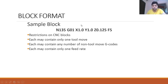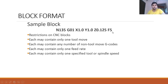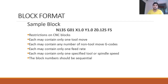Each block may contain only one feed rate. If F5 is specified, that feed rate is followed unless changed — two feed rates in a single block are not possible. Each block may contain only one specified tool or spindle speed. You cannot write T01 T02 in the same block. Block numbers must be sequential; the MCU reads blocks sequentially and requires proper sequence numbers.